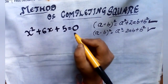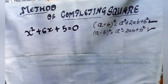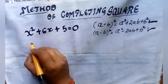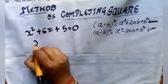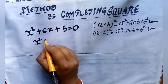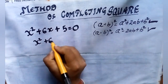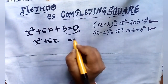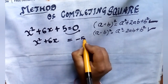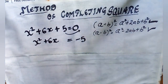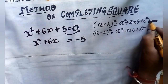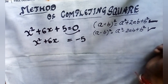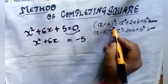Now let us discuss this method with the help of one quadratic equation: x² + 6x + 5 = 0. The first step is to check whether your first term is a perfect square or not — yes, it is. Now the second step is to take the constant term to the right side, so 5 becomes negative 5. The equation becomes x² + 6x = -5.